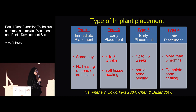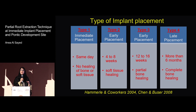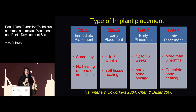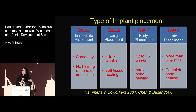When we talk about immediate implants, we have to talk about the four types of implant placement. The ITI consensus divided it into four types. Type 1 is immediate implant — you extract the tooth and you place the implant.